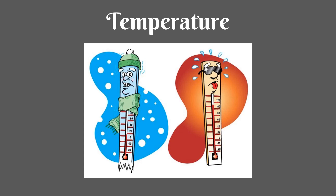Temperature is a measure of how hot or cold something is. The temperature of an ecosystem is the temperature of the air. It is affected by latitude and elevation. Temperature affects which organisms can live in an ecosystem.